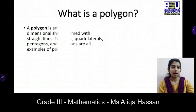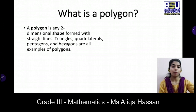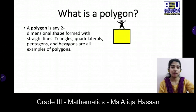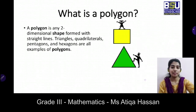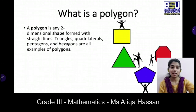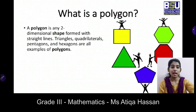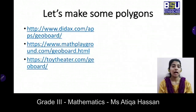What is a polygon? A polygon is a two-dimensional shape formed with straight lines. Some examples are square, triangle, pentagon, octagon, and hexagon.